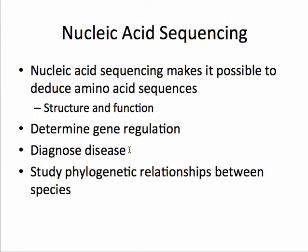We can help to diagnose disease. I'm sure many of you are familiar with the BRCA1 test. The movie star Angelina Jolie made that popular when she came out with a public statement saying that her BRCA1 gene was mutated. And lastly, by knowing nucleic acid sequences, we can look at phylogenetic relationships between species and see how similar or different their nucleic acid sequences are. For instance, humans and chimpanzees share almost 99% of their DNA.